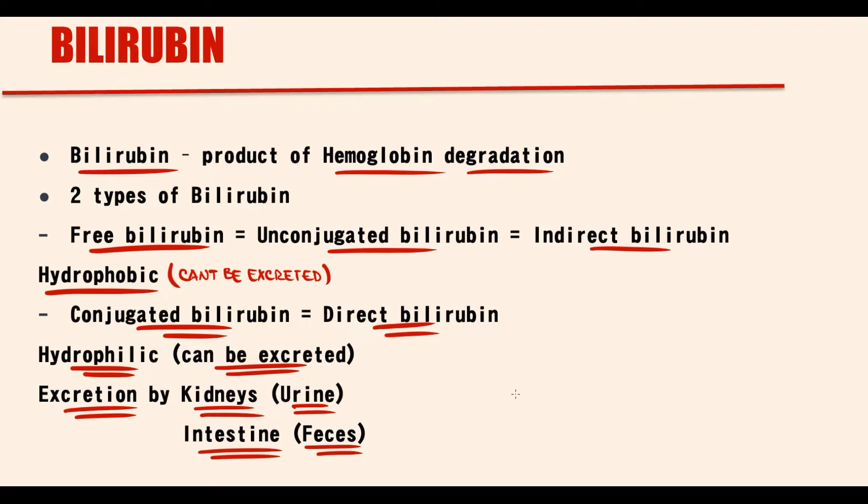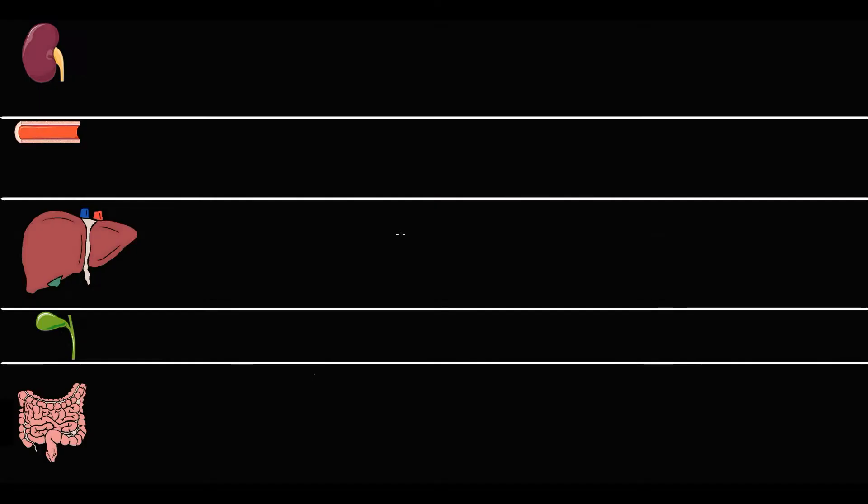Let's explain the entire pathway of bilirubin in our organism. We have five compartments: kidneys, blood, liver, bile, and intestine.